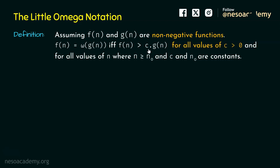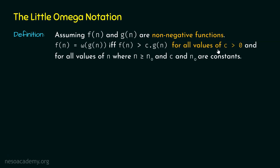The third difference is that in place of 'for some C greater than 0' we now have 'for all values of C greater than 0.' This inequality must be satisfied for all positive constants C. Then only we can say Fn is little omega of Gn.